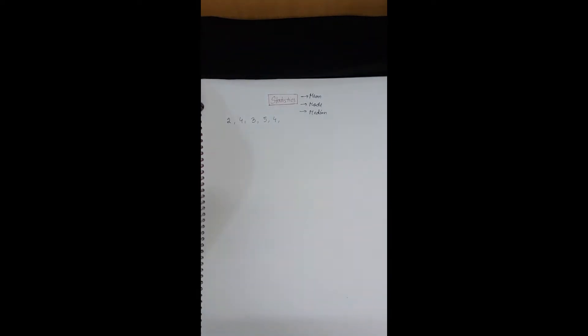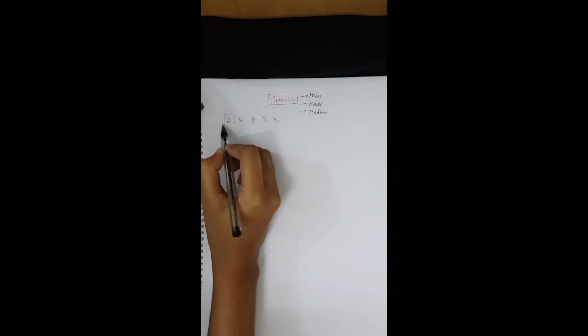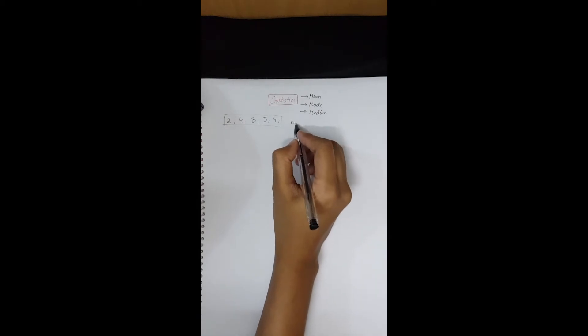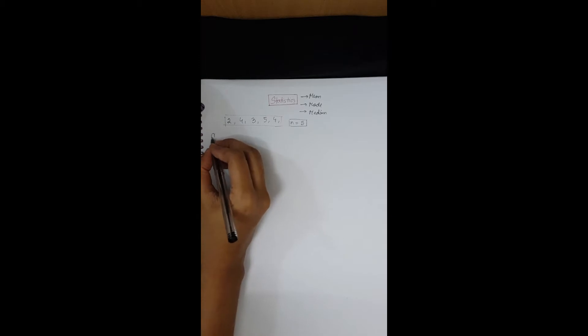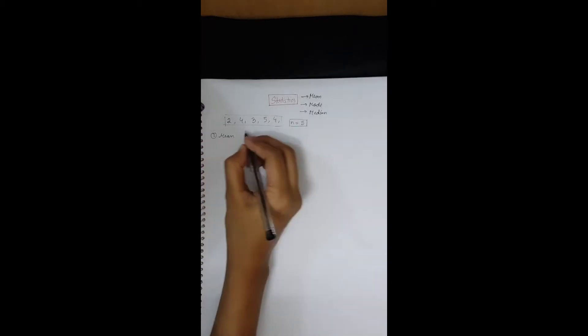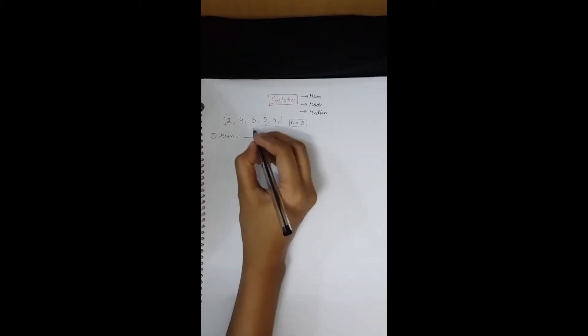Since you have 5 data, n equals 5. n represents the number of data available. At first, we need to find the mean. The formula for finding mean equals sum divided by n.